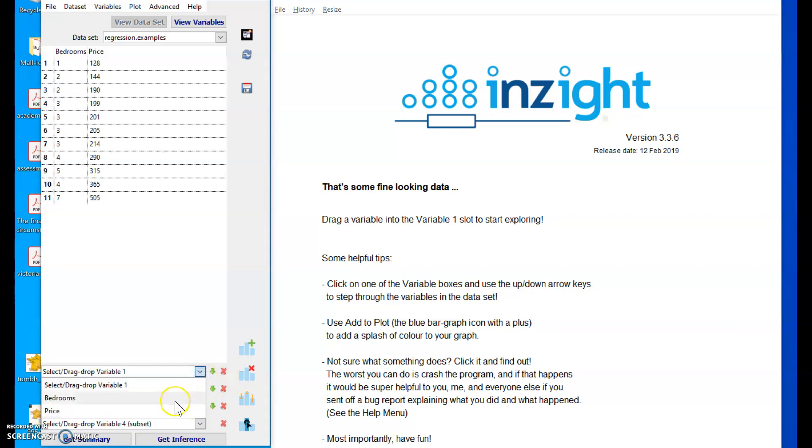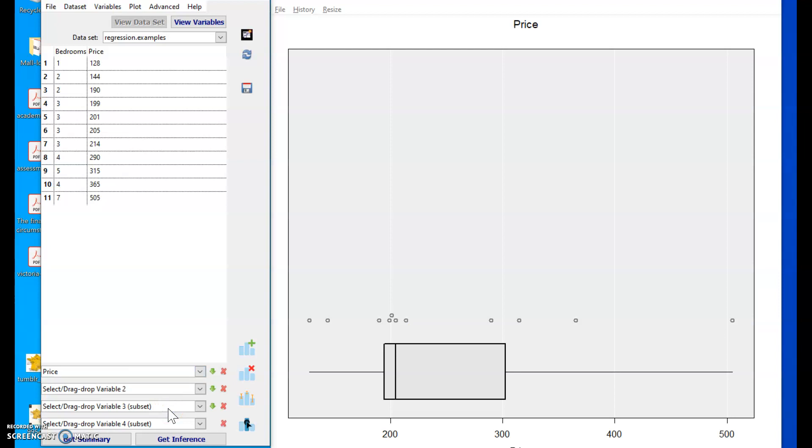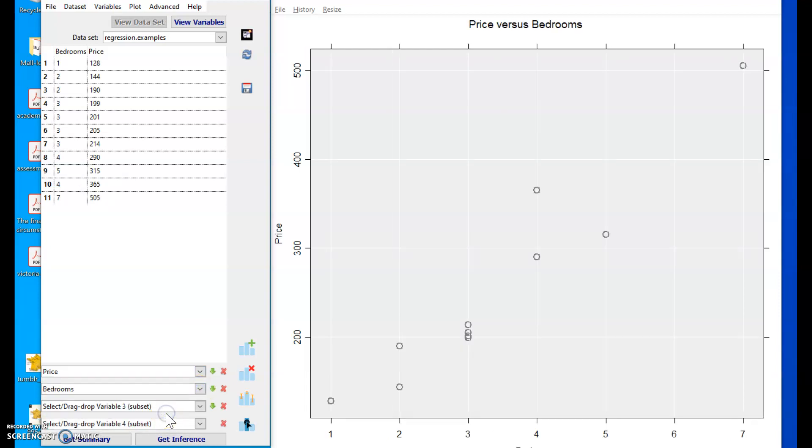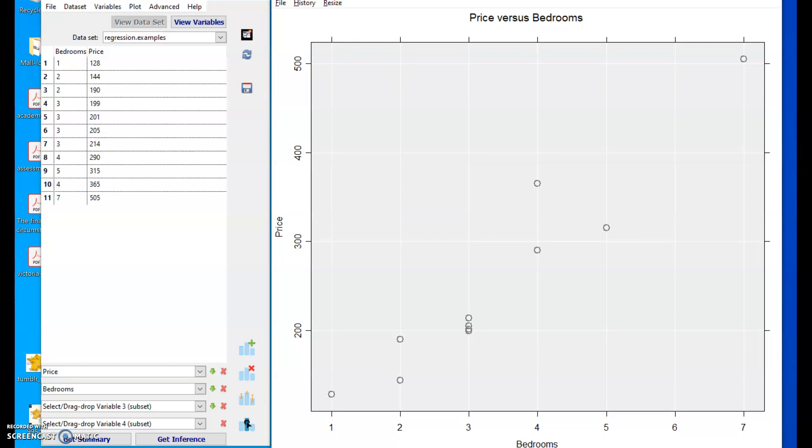Price is the dependent variable, so I choose that as variable one when I select the second quantitative variable. Inzite kindly draws for me a scatter plot of those two variables.